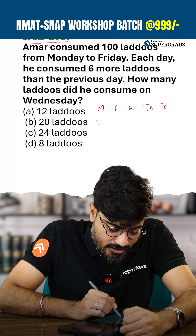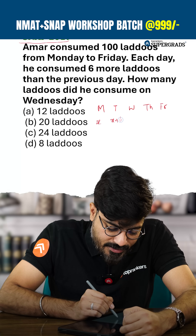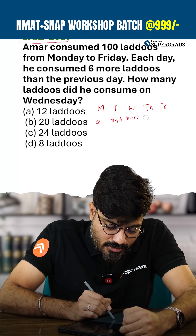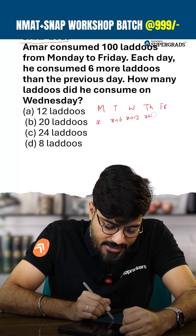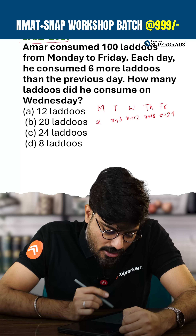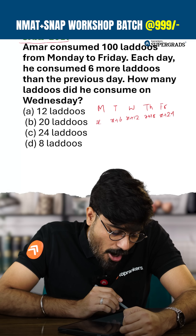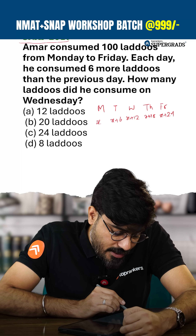So this is x, this is x plus 6, this is x plus 12, this is x plus 18, and this is x plus 24. This is how he is consuming the ladoos.